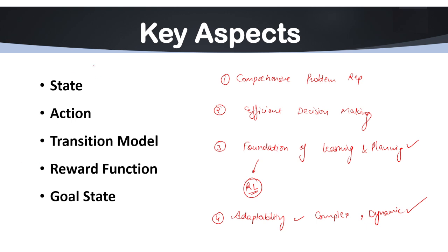The next reason is support for multi-agent and multi-variable scenarios. It is also goal-oriented problem solving — that is the sixth reason. Another reason is that it supports and can facilitate model-based problem solving. So all these are the reasons why we should use state space representation.